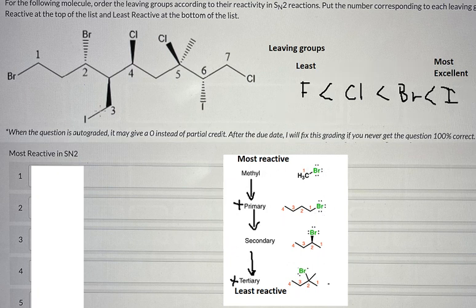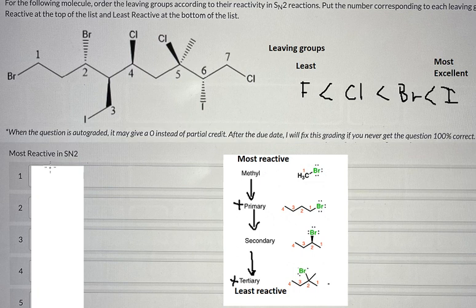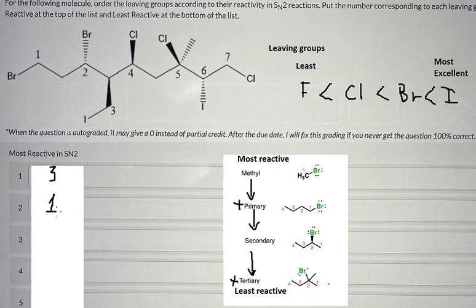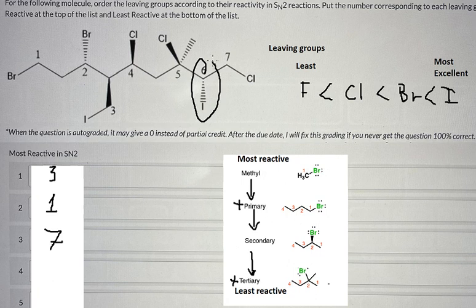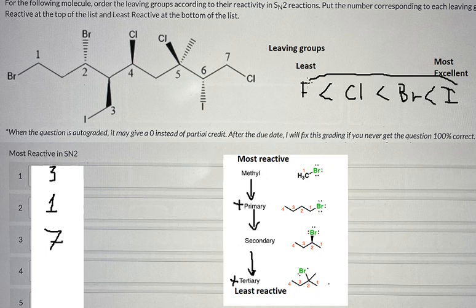After we find the primaries, we compare them. The most excellent leaving group among the primaries is iodide (I), so that should be number 3 — the most reactive is number 3. Then we go to Br, and we put number 1. The next one is Cl, so we put number 7. Now we go to secondary — we have this one, this one, and this one.